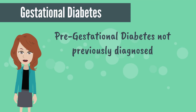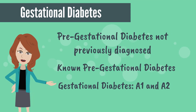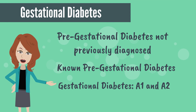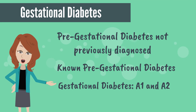Women can come into pregnancy with known pre-gestational diabetes, undiagnosed pre-gestational diabetes, or they can develop diabetes through the course of their pregnancy. The greatest risk for diabetic embryopathy or major malformations are in those women with poorly controlled pre-gestational diabetes, whether known or unknown.